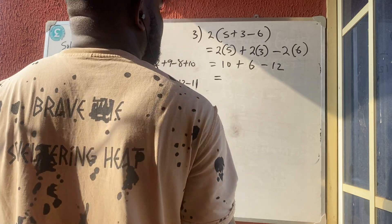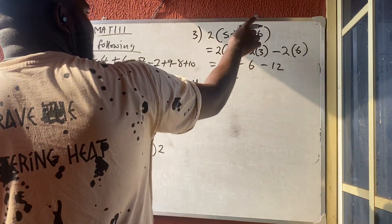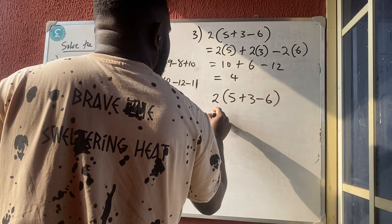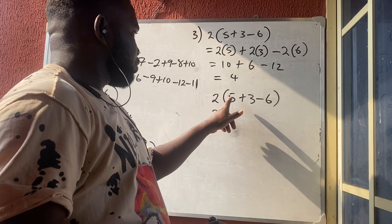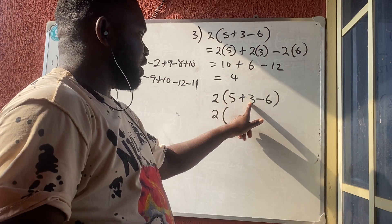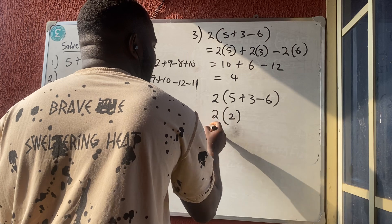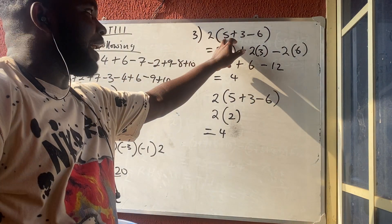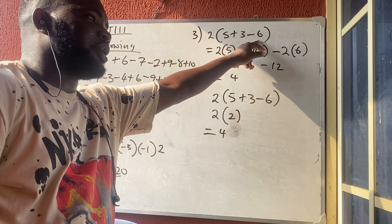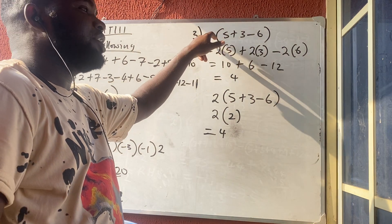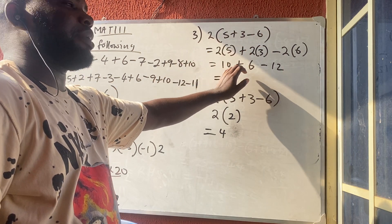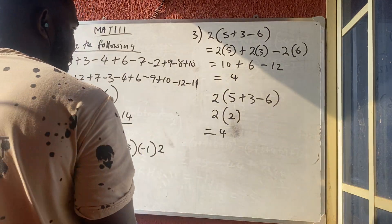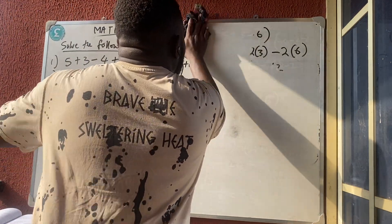So we get ten plus six minus twelve: sixteen minus twelve equals four. Let's verify the other method: inside the brackets, five plus three is eight, eight minus six is two, then two times two equals four — the same answer. We use expansion when we have alphabets like a plus b plus c times d that cannot be added directly.